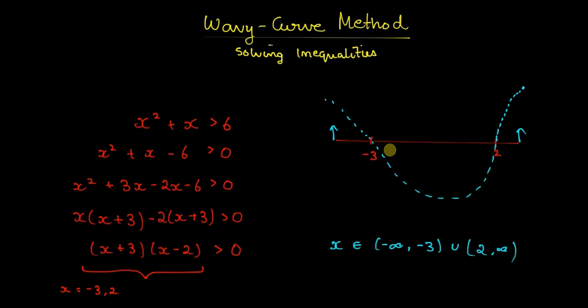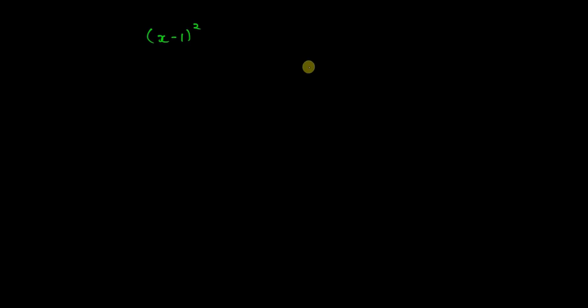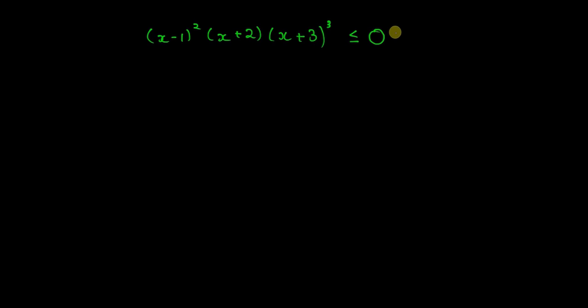Let us see another example. Suppose the factored form you get is (x-1)² (x+2)(x+3)³ less than or equal to 0. How will you go about solving this?